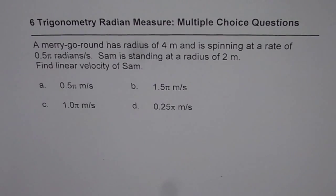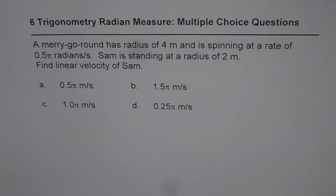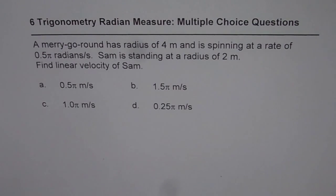I'm Anil Kumar and here is your review question on Chapter 6 Trigonometric Radian Measure. A merry-go-round has a radius of 4 meters and is spinning at a rate of 0.5 pi radians per second. Sam is standing at a radius of 2 meters. Find the linear velocity of Sam.